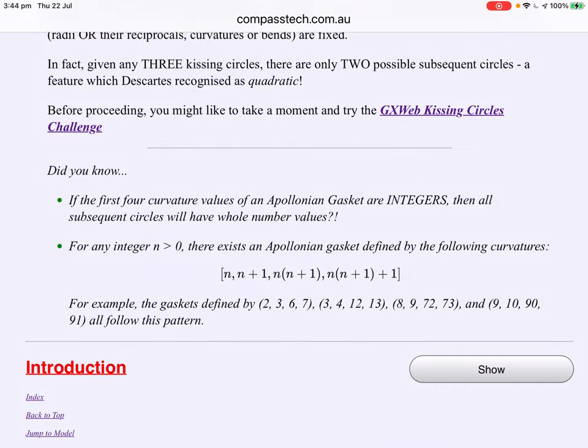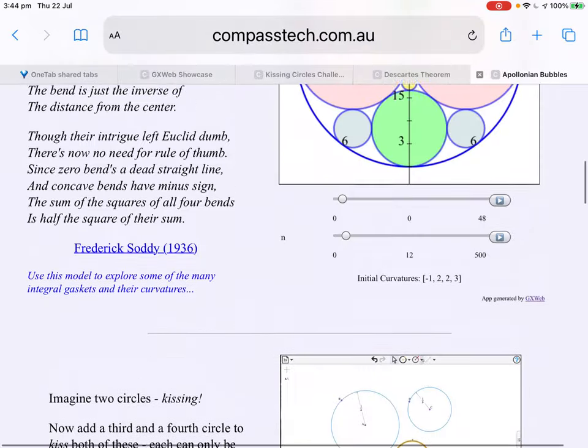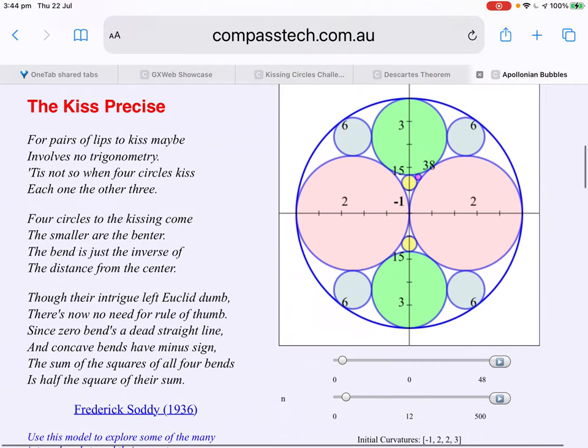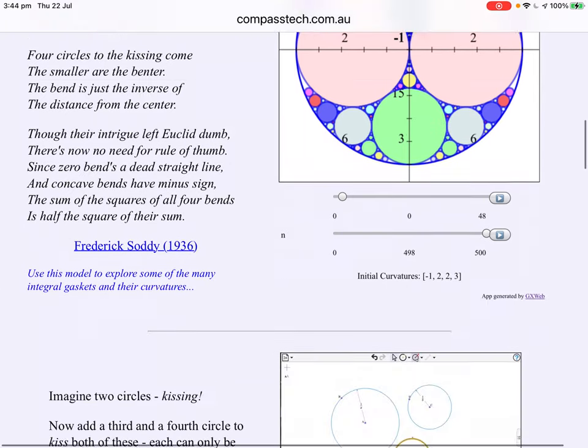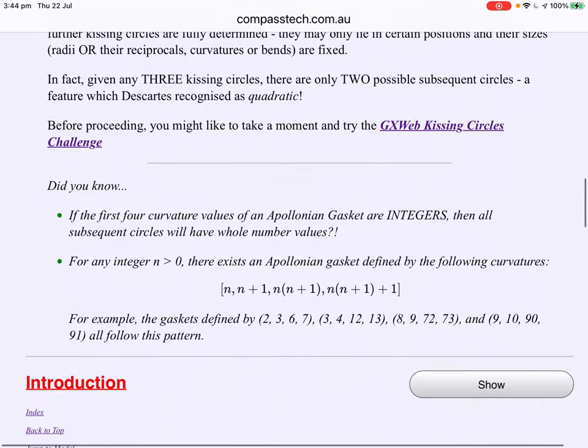Did you know if the first four curvature values of an Apollonian gasket are integers, then all subsequent circles will have whole number values? No matter how many that is. Remember our diagram here, we had... I stopped at 500 because more than that seemed to be showing off. All whole numbers.